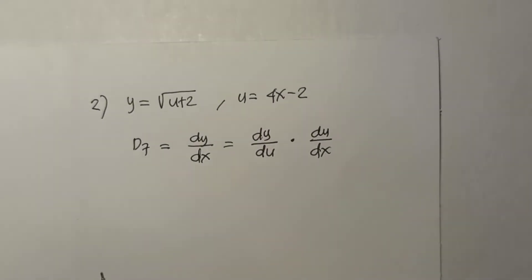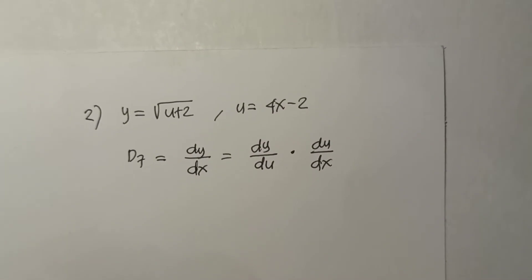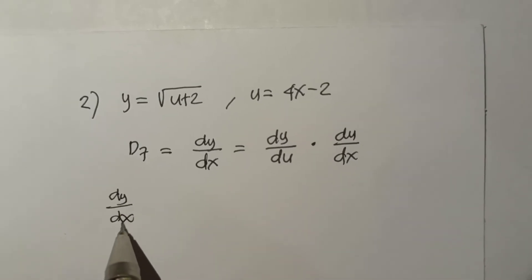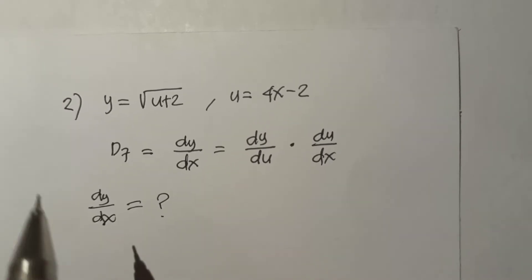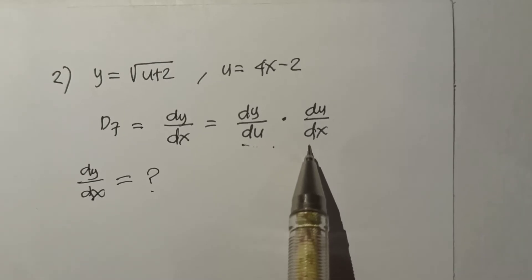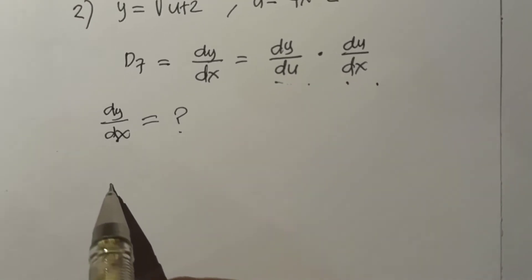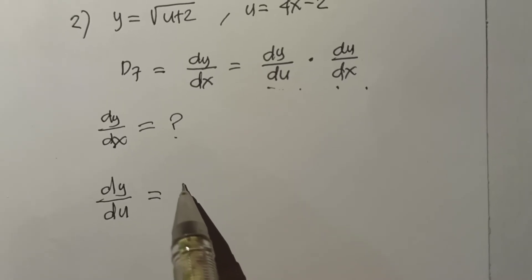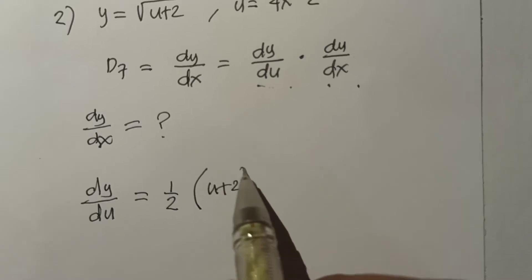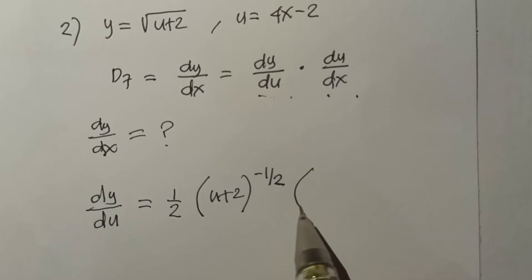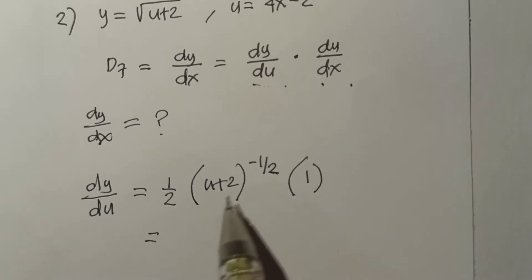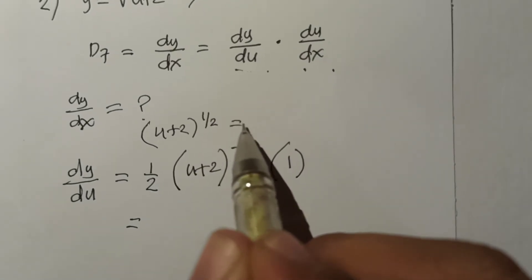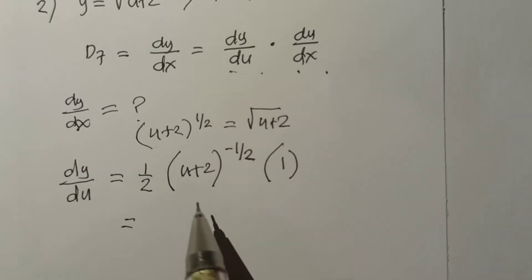Problem number 2: y = √(u + 2) and u = 4x − 2. We need to find dy/dx using the chain rule. First, find the derivative of y with respect to u. Expressing √(u + 2) as (u + 2)^(1/2), by the power rule we bring down 1/2 and get (1/2)(u + 2)^(−1/2) times the derivative of (u + 2), which is 1.